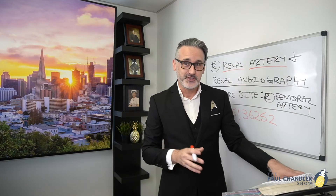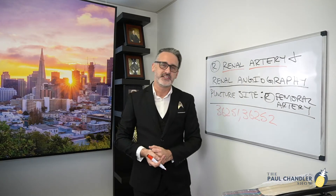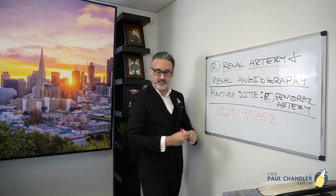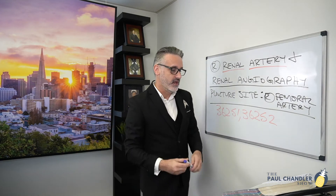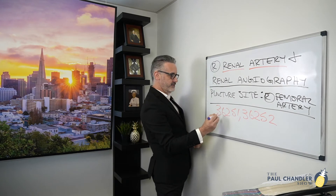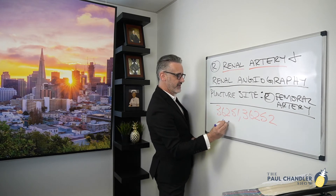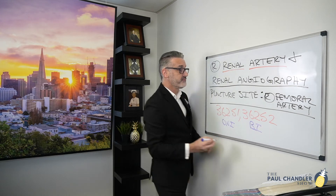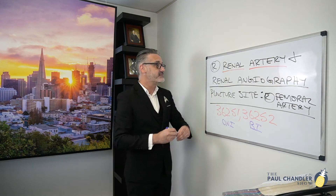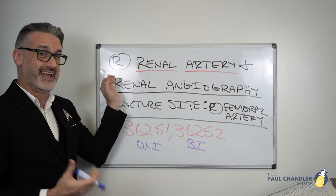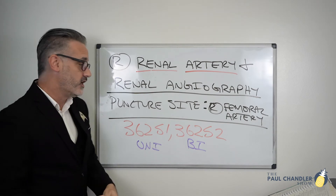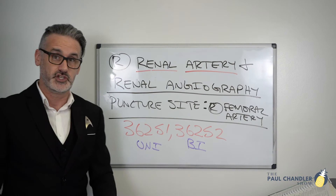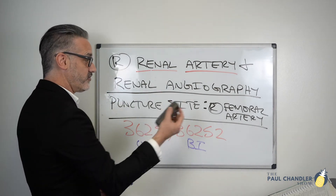Looking up those two codes — 36251 and 36252 — on page 266, the difference is that 36251 is unilateral and 36252 is bilateral. Since we're only doing the right renal artery and not both sides, we can automatically eliminate 36252. We're left with 36251.